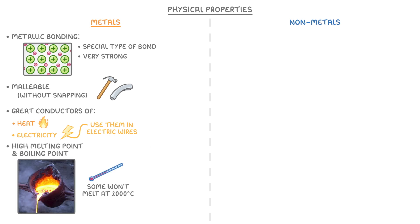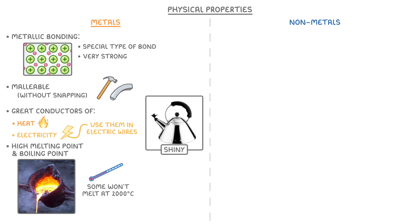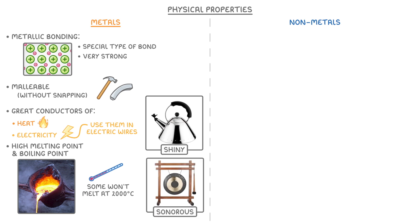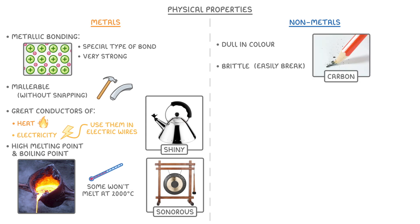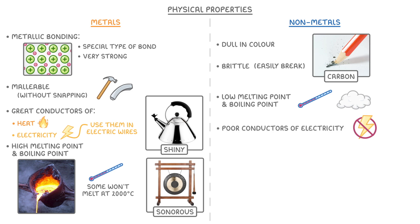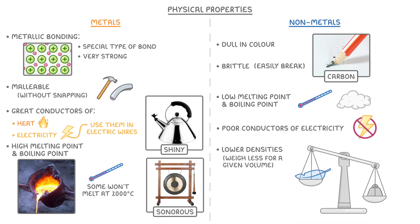In fact, some of them still won't have melted at 2000 degrees. Other properties include being shiny and being sonorous, which means they create a ringing sound when you hit them. Non-metals, on the other hand, tend to be dull in colour and brittle, which means they easily break like the carbon in your pencil, and generally have low melting and boiling points, with many of them being gaseous at room temperature. They're also poor conductors of electricity and generally have lower densities than metals, which means they weigh less for a given volume.